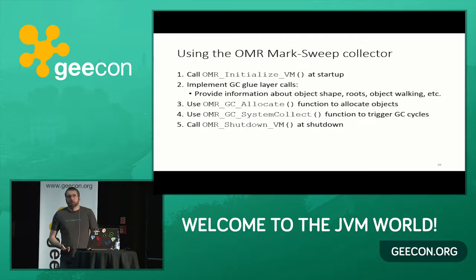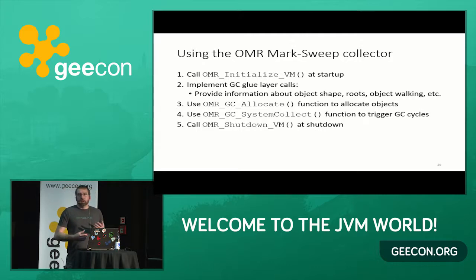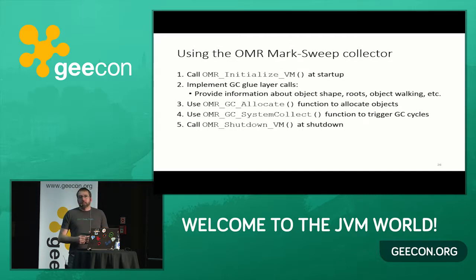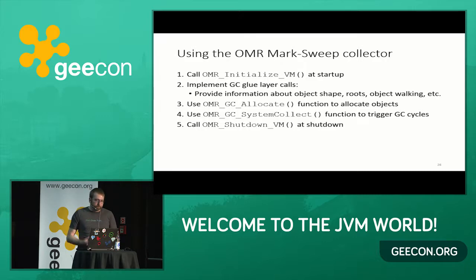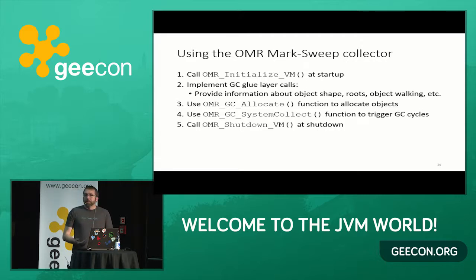To bring up the OMR GC in a new runtime there are only four or five steps. Steps one and five are the startup and shutdown APIs for the OMR library, which initialize the components based on your build flags. You provide an implementation for any required glue — for the simple GC you don't need sophisticated glue, only what's required for the features you use. Then any allocation or GC calls just use the two provided APIs, and you're up and going with scalable garbage collection technology.